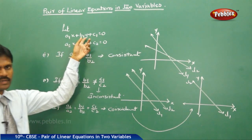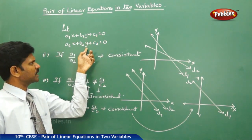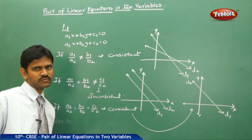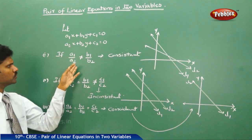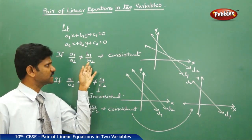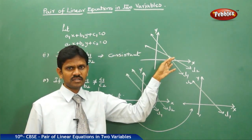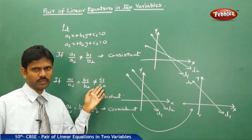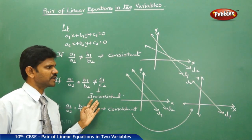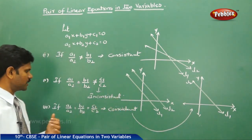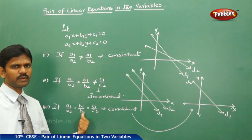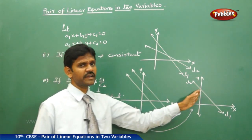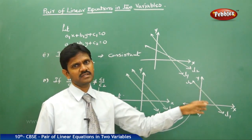For the pair of linear equations A1x plus B1y plus C1 equals 0 and A2x plus B2y plus C2 equals 0, three different cases arise. Case 1: A1/A2 ≠ B1/B2 — the lines are consistent and intersect each other. Case 2: A1/A2 = B1/B2 ≠ C1/C2 — the lines are inconsistent and parallel. Case 3: A1/A2 = B1/B2 = C1/C2 — the lines coincide and have infinitely many solutions, so they are also called consistent lines.